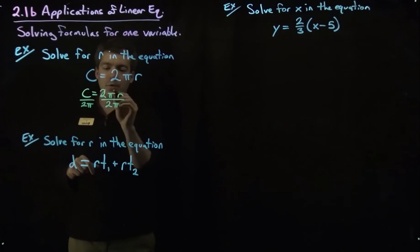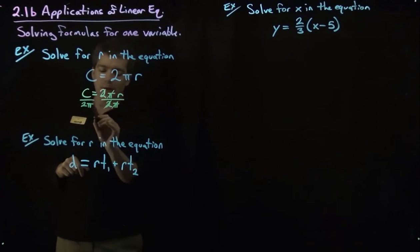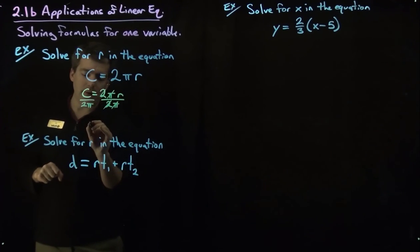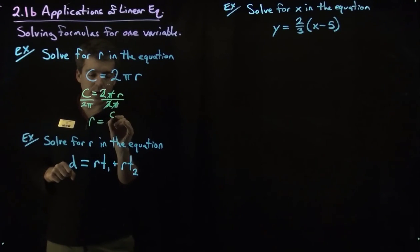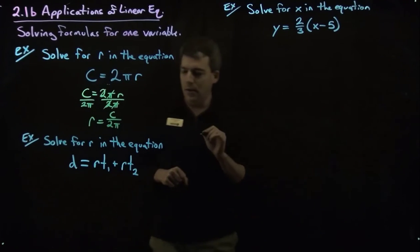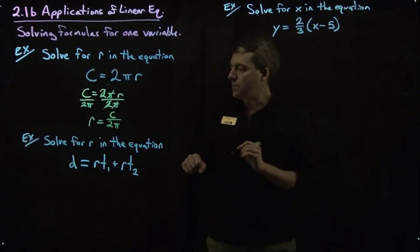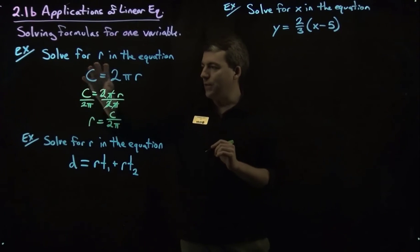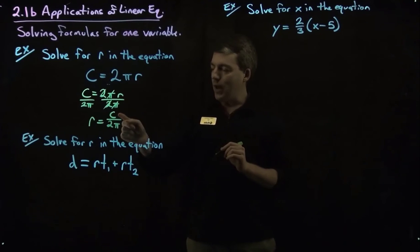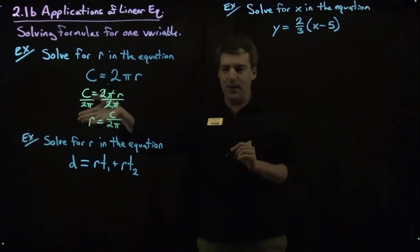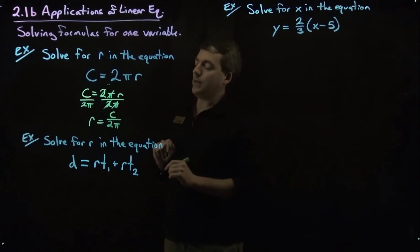So we have the 2 pi's cancel, we're left with r, I'm going to go ahead and write it on the left here, r equals c over 2 times pi. So we have solved this equation for r and now if we have our circumference we could plug that in and then get recovered the radius of the circle.